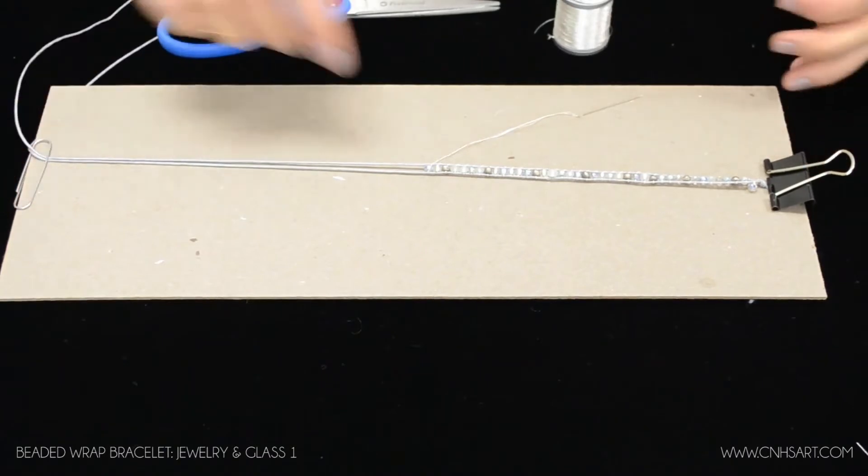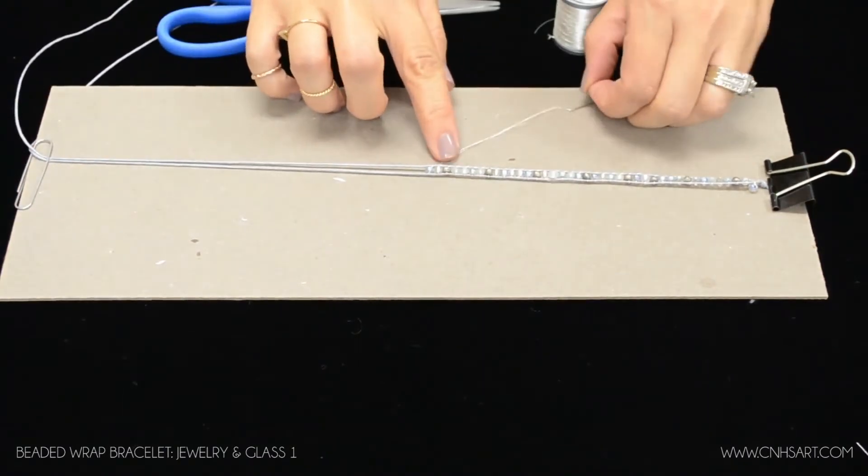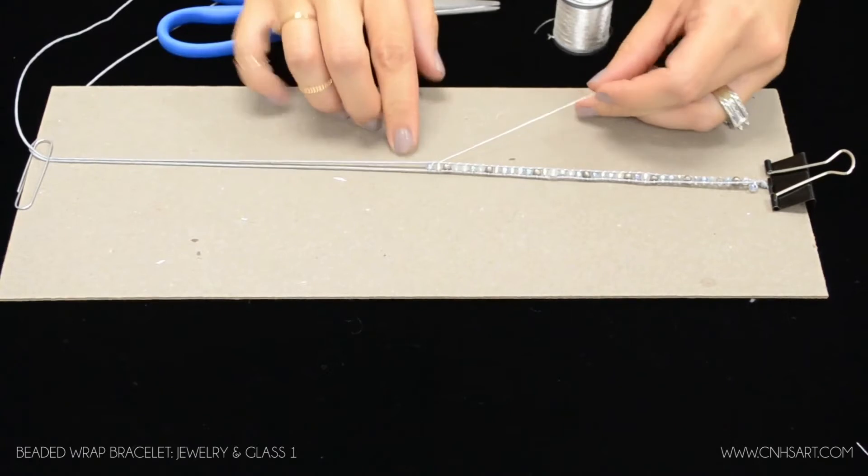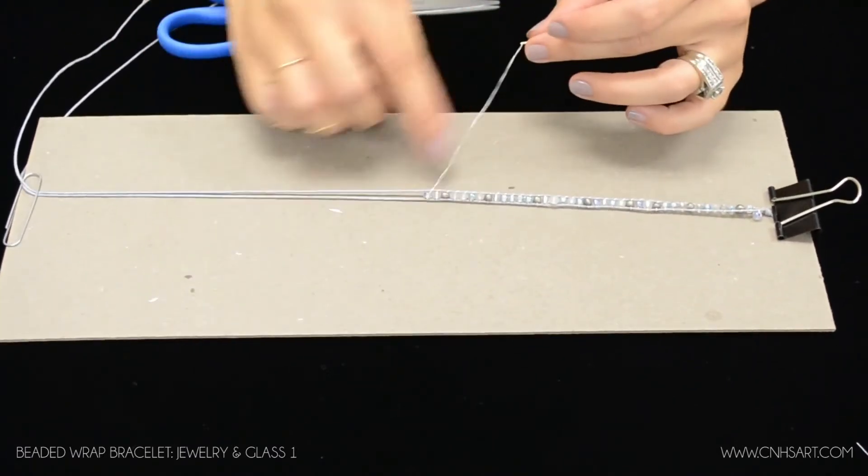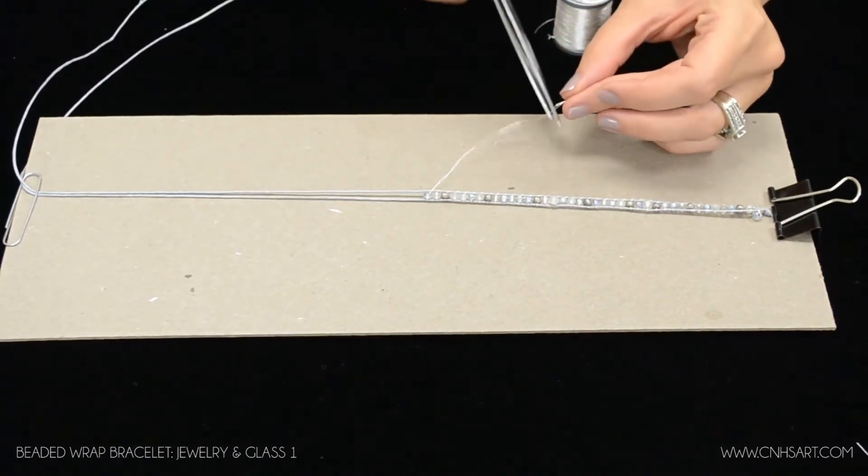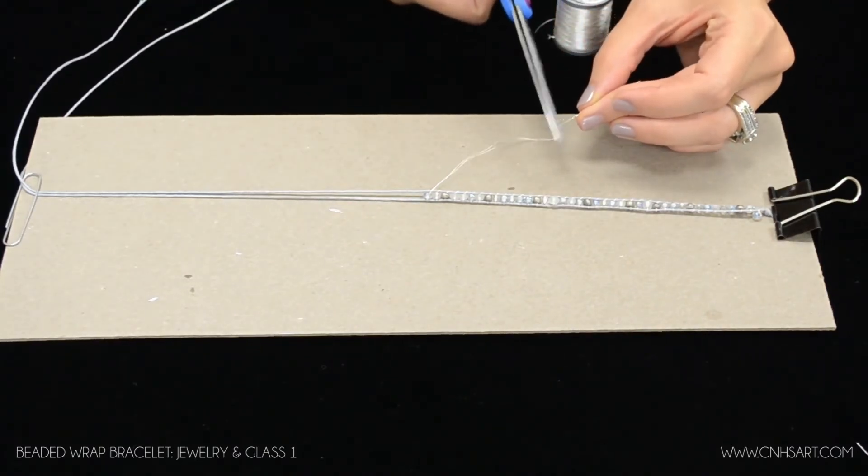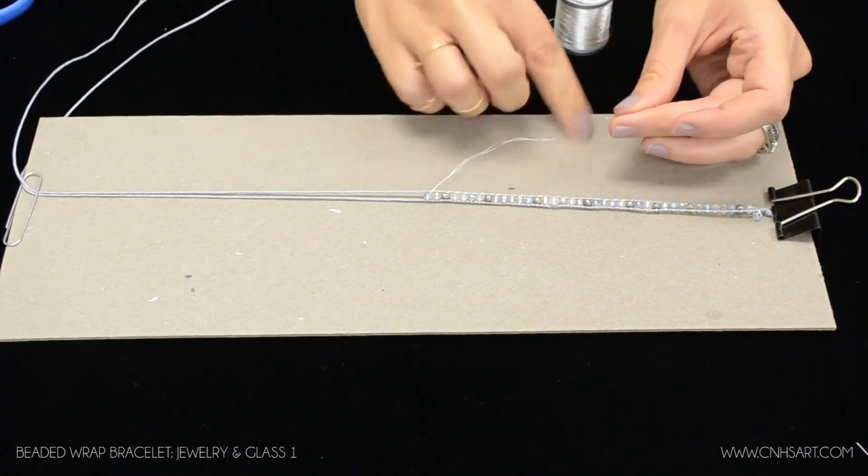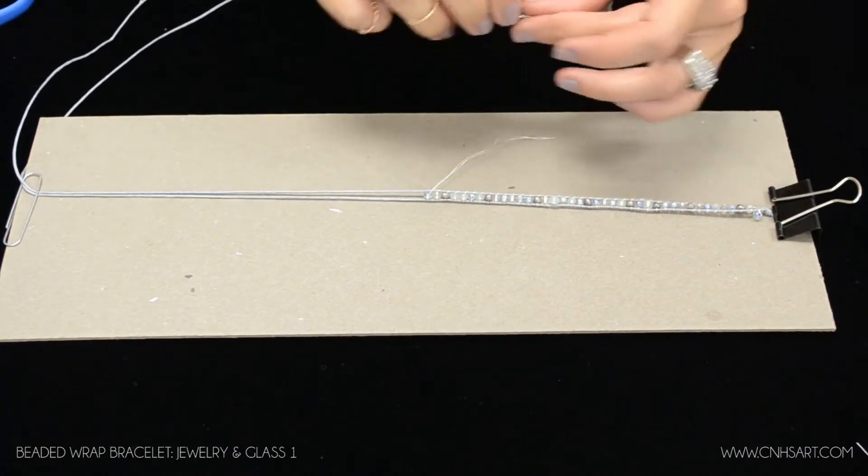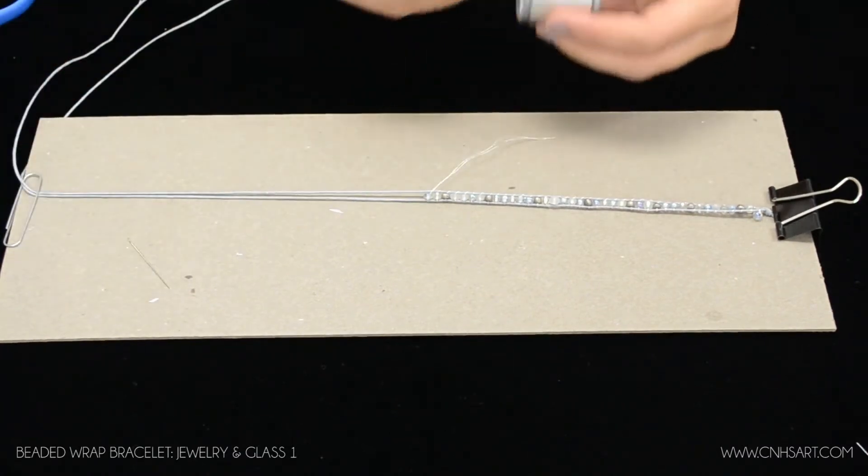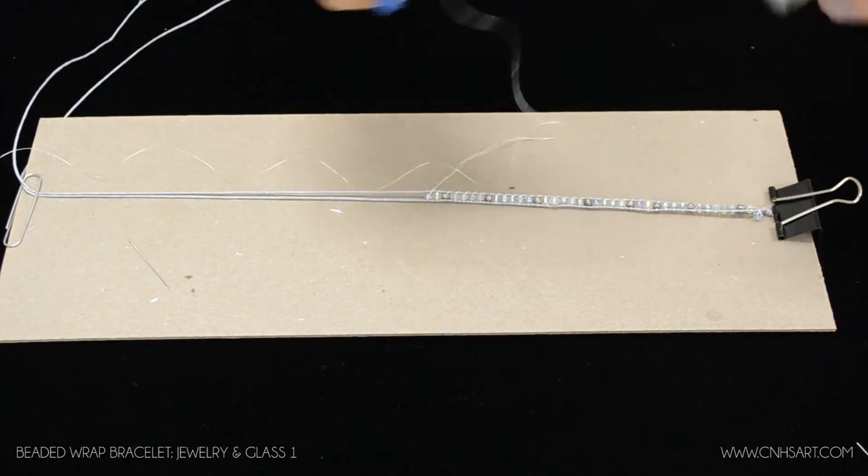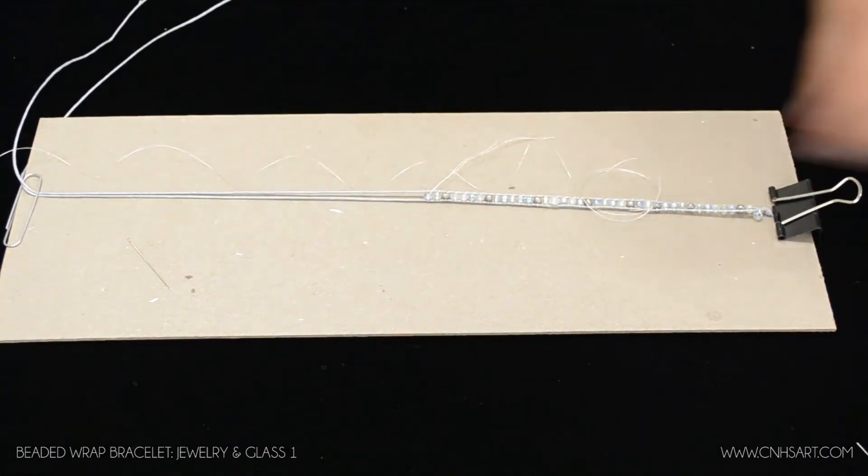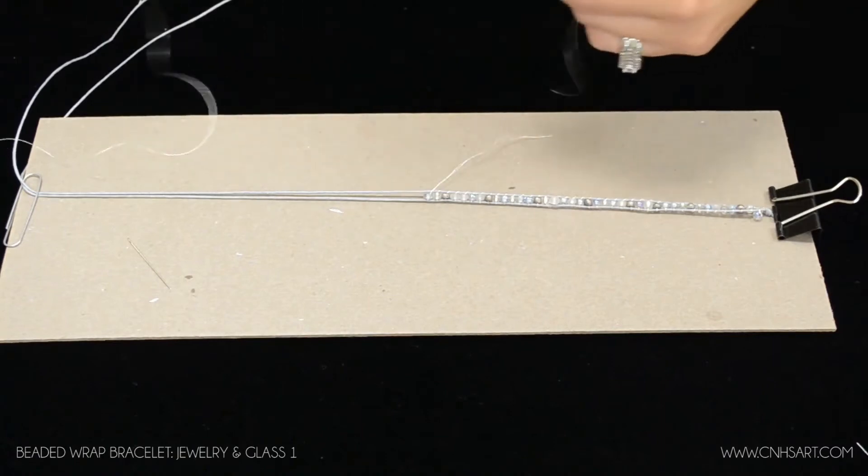Once you get to the point where you are ready to add more thread on, so usually when you have three to four inches of your thread left here, what you're going to do is trim off the needle just right below the needle. Set that to the side. Grab a new piece of thread. Just about the same length that you had the first time. Cut that.